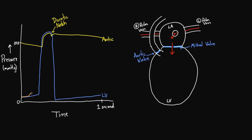Then there's a bump. There's a bump in the pressure tracing. Why? Because of a process called atrial systole — the atrium actually contracts. Just like the ventricle likes to contract, the atria can also contract. We call this the A wave. The left ventricular pressure tracing isn't really straight either; it also has a little bump, because the two chambers are continuous — whatever happens in one is reflected in the other.